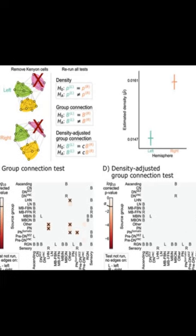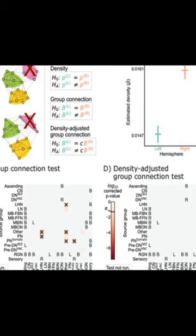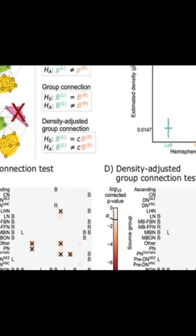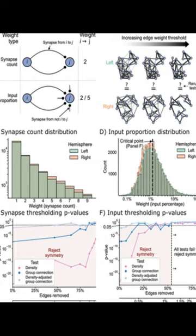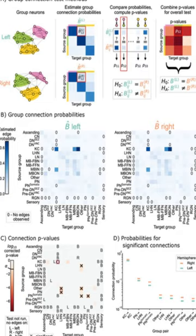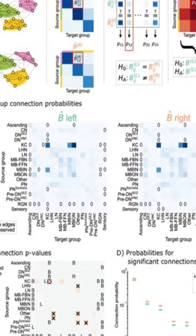This paper examines the differences between the left and right sides of a larval drosophila brain connectome. It finds that there are significant differences in connection probabilities between the two sides, as well as between different cell types. The authors then use these differences to create adjusted definitions of bilateral symmetry for the connectome. This work demonstrates how statistical inferences from networks can be used to inform the study of connectomes, which could potentially lead to more accurate comparisons between neural structures.